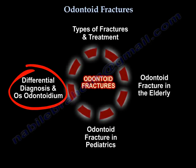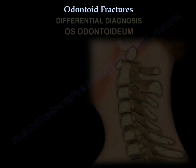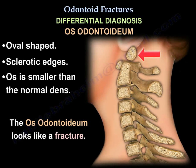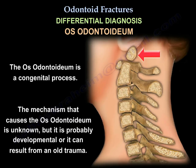Differential diagnosis: odontoid fracture versus os odontoideum. The os odontoideum is oval-shaped with sclerotic edges and is smaller than the normal dens. It can look like a fracture. It is a congenital process of unknown mechanism — probably developmental or resulting from old trauma.